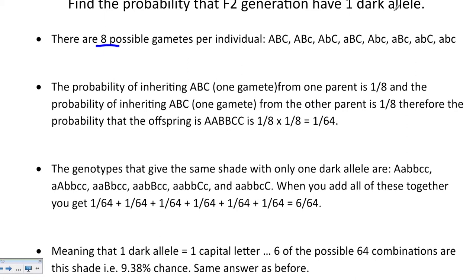The combination we want is one dark allele — one capital letter. The genotypes that give a shade with only one capital letter are listed by moving that capital letter through all positions. When you add all those probabilities together — each being one sixty-fourth — you get six sixty-fourths, which is also nine point three eight percent: the same answer as before.